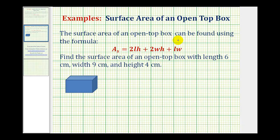The surface area of an open top box can be found using the formula A equals 2LH plus 2WH plus LW, where L is the length of the box, H is the height of the box, and W is the width of the box.